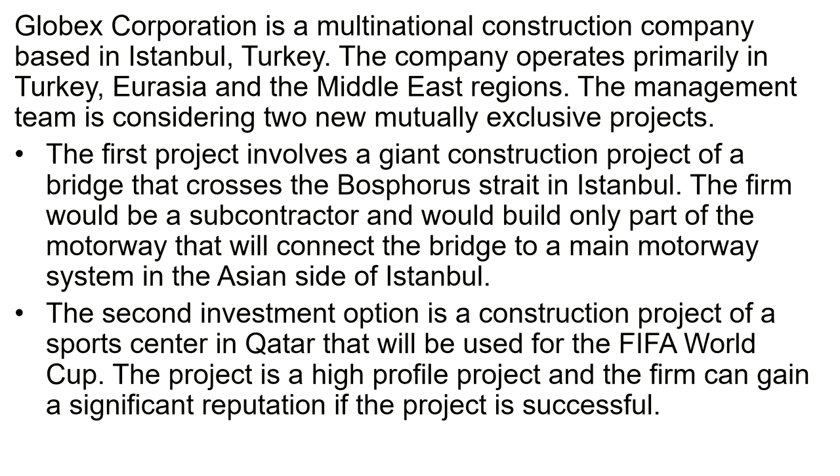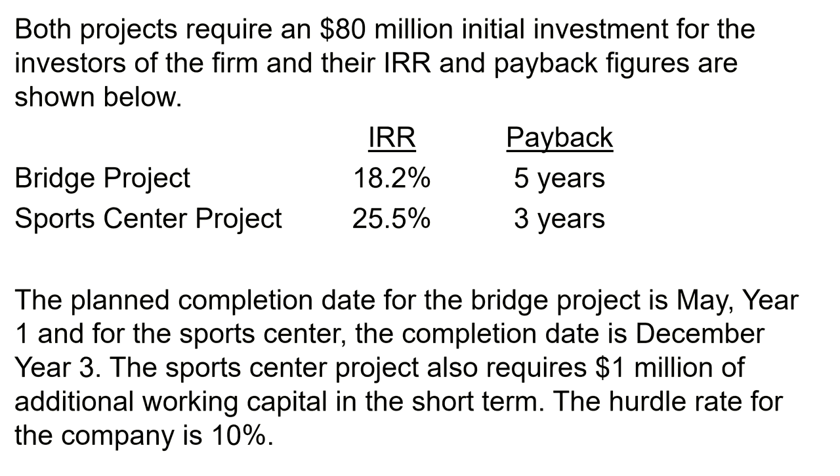Globex Corporation is a multinational construction company based in Istanbul, Turkey. The company operates primarily in Turkey, Eurasia, and the Middle East regions. The management team is considering two new mutually exclusive projects. The first project involves a giant construction project of a bridge that crosses the Bosphorus Strait in Istanbul — the firm would be a subcontractor building part of the motorway connecting the bridge to a main motorway system on the Asian side. The second investment option is a construction project of a sports center in Qatar for the FIFA World Cup — a high-profile project where the firm can gain significant reputation if successful.